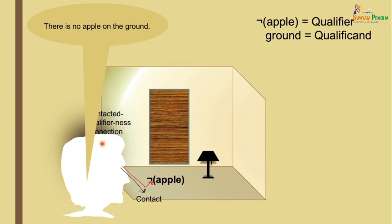So we have seen a few representations and studied them. Not only representations — we have also seen how they are processed almost in a mechanical manner, and how perceptions and illusions of different kinds result from that. This is the end of this session. In the next session, we'll talk about reasoning and inference. Thank you very much.